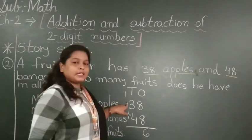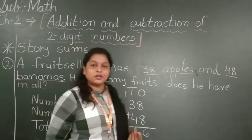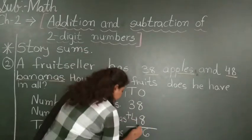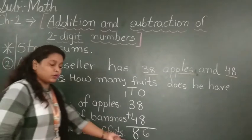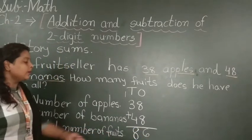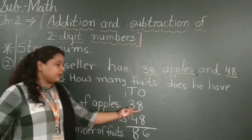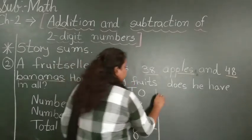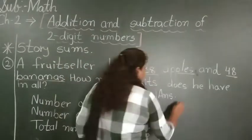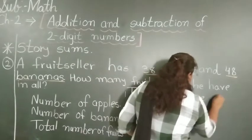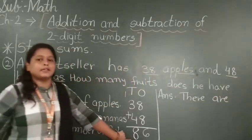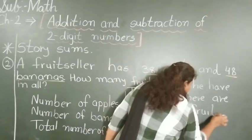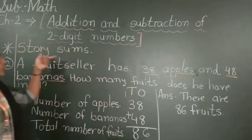Now 1 plus 3 is 4, and 4 plus 4 — counting: 5, 6, 7, 8. So you write 8 here. Total number of fruits: we have 86 fruits. That means 38 apples and 48 bananas. So we write the answer: There are 86 fruits. Here we completed our second example of the story sums.